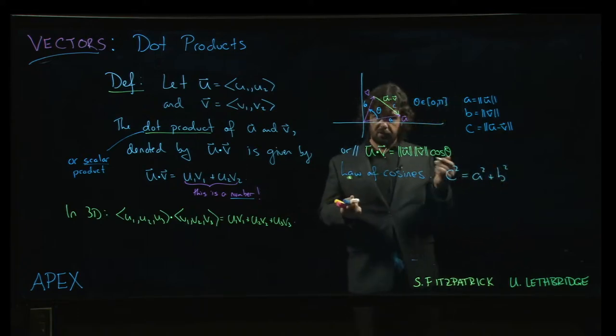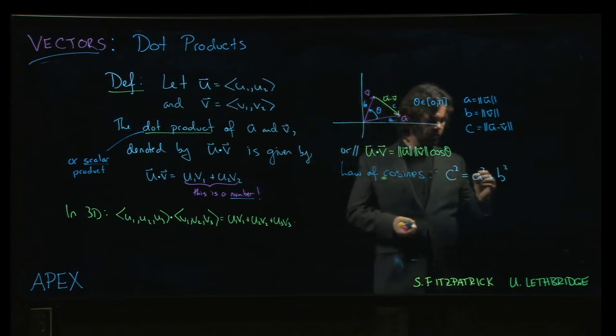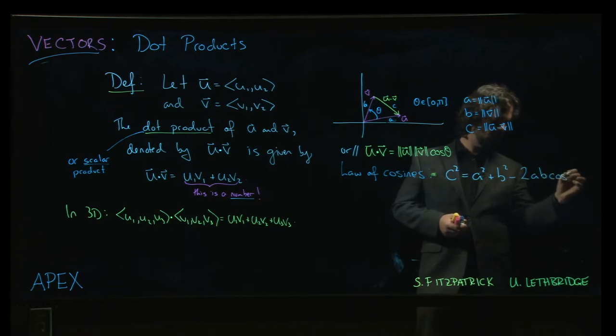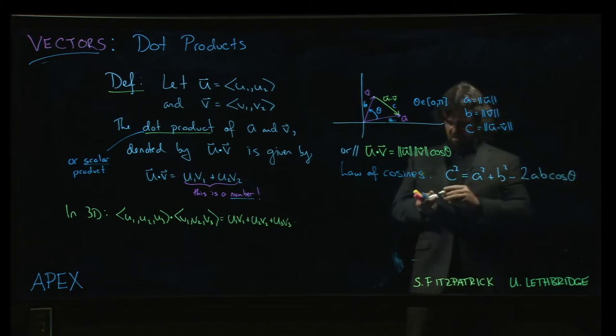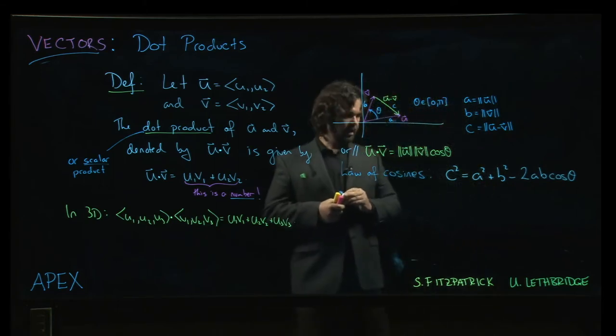So, the law of cosines says that c squared should be a squared plus b squared. Now, that's what you would have if it's a right angled triangle. But if it's not a right angled triangle, then you get, and I believe it's a 2, I hope I'm getting this right, 2ab cosine theta. So, this is kind of like a correction term to the Pythagorean theorem in the case where you don't have a right angled triangle.